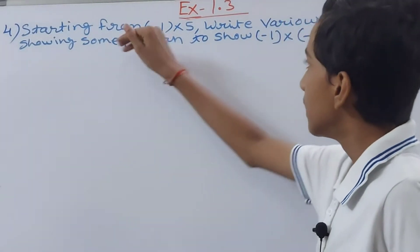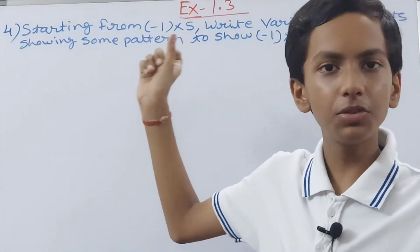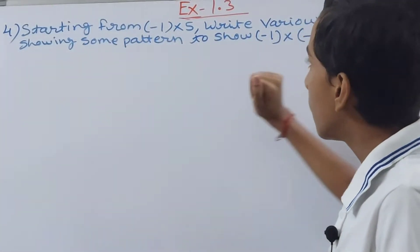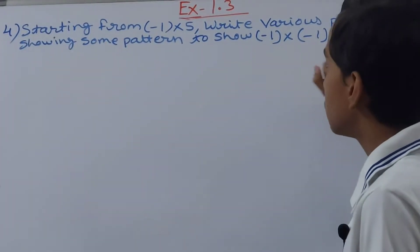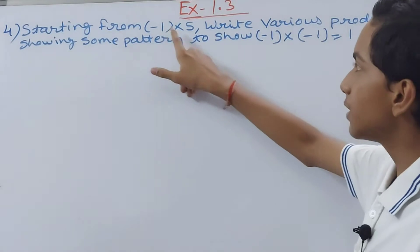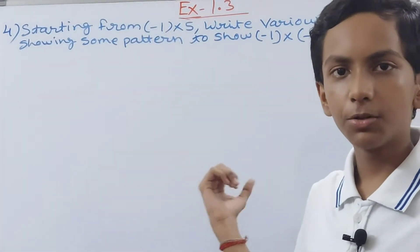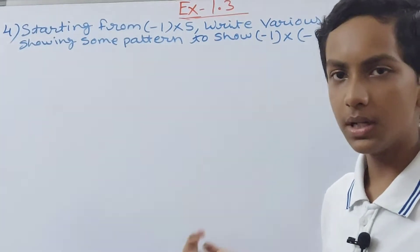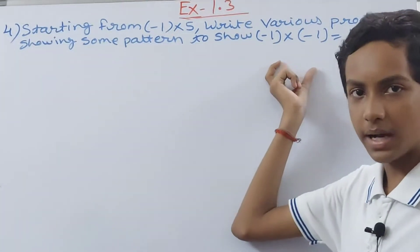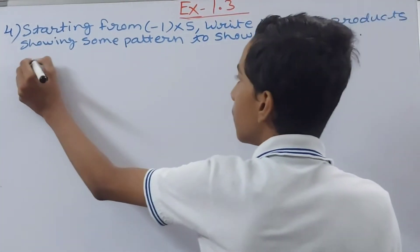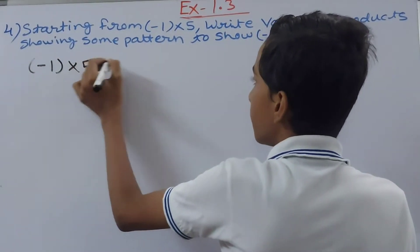From -1 × 5, we have to make patterns which will show multiplication all the way till -1 × (-1). So we write: -1 × 5, then -1 × 4, -1 × 3, -1 × 2, -1 × 1, -1 × 0, and finally -1 × (-1).